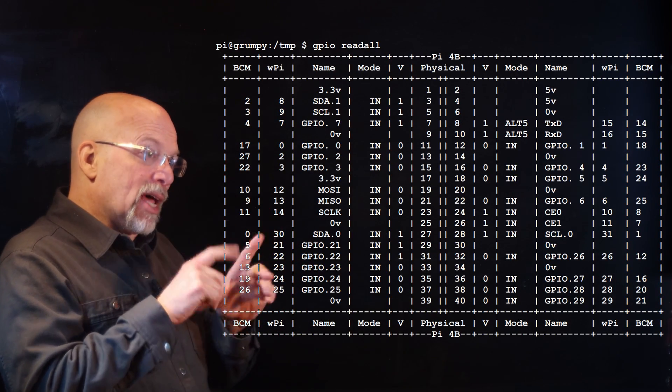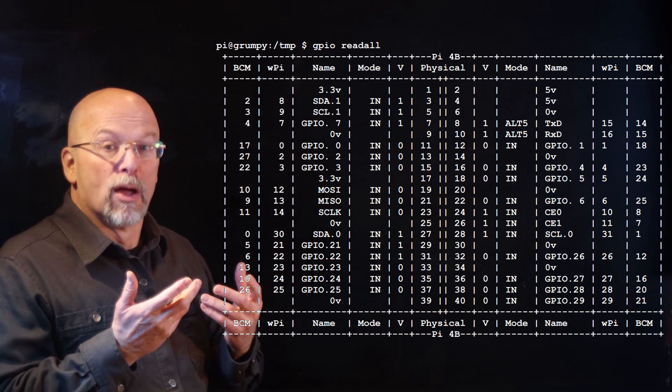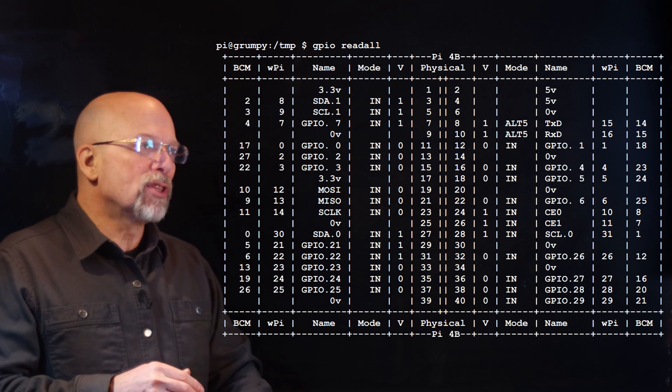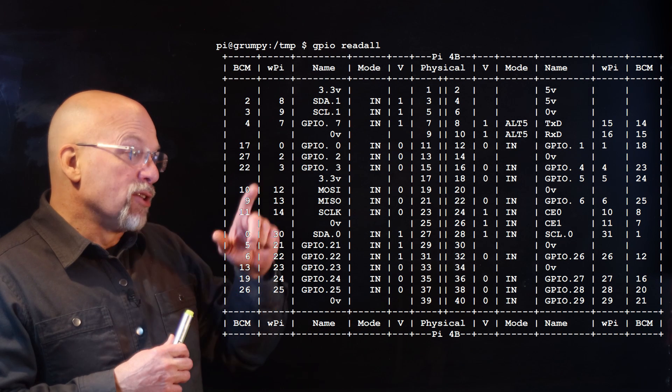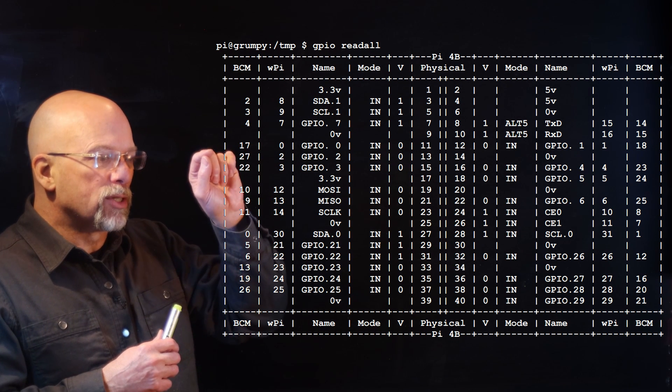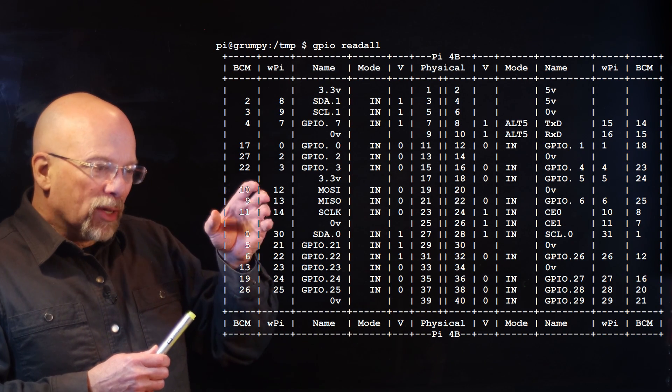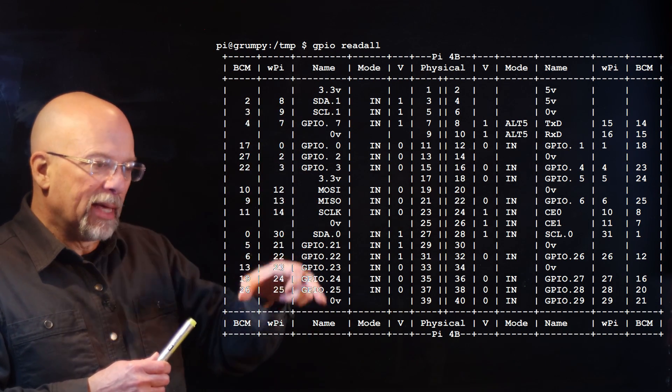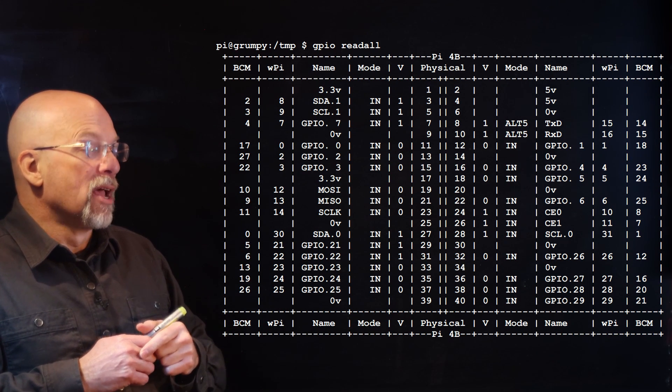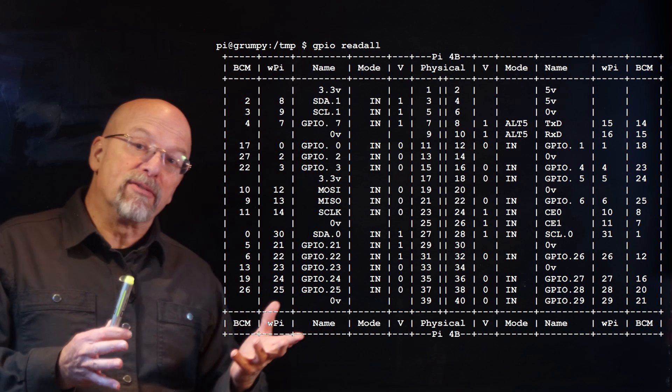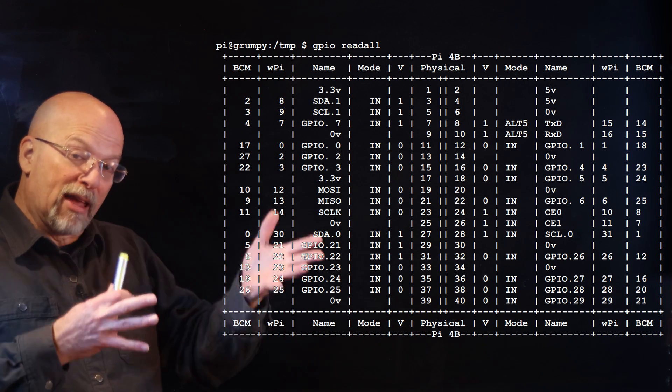Now if you take a look at this output, this output is from a library of routines called, or it's the command line interface for a library of routines called Wiring Pi. And Wiring Pi gives you the ability to make this display and show you what all the different values are for our different inputs. And you'll notice that, except for a couple of ones, the ones that are on physical pins 8 and 10, all of them are defaulted to inputs. And you can see that under the mode column. So the physical pins are that center column, and then you've got the mode, which is on either side of the V columns. Now the V, those are showing what the default values are. This particular Raspberry Pi, whenever I powered it up, I went ahead and just did a GPIO read all, and that gave me this table.